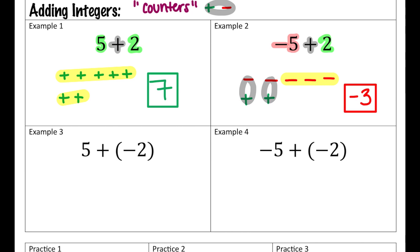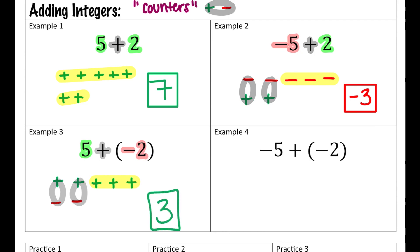Let's take a look at example three. I have positive five, or five positives — one, two, three, four, five. And I'm adding negative two, or in this case two negatives. Like last time, I'm going to put them underneath my positives. I have some zero pairs — a positive and a negative make zero, and another one makes zero. That leaves me with three positives remaining, so my final answer is positive three.